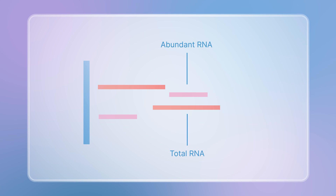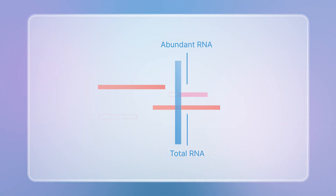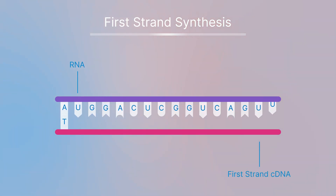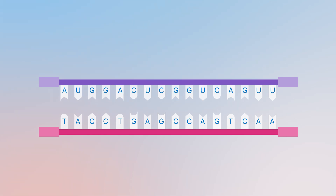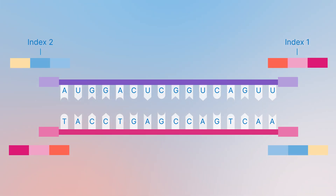In the first step, abundant RNAs — including rRNAs and globin RNAs — are enzymatically removed from total RNA using RIBO0+ rRNA depletion reagents. After depletion, the remaining RNA transcripts are chemically fragmented and reverse-transcribed to double-stranded cDNA. Next, adapters are ligated to both ends of the double-stranded cDNA construct, and the libraries are completed by adding indices during PCR amplification.